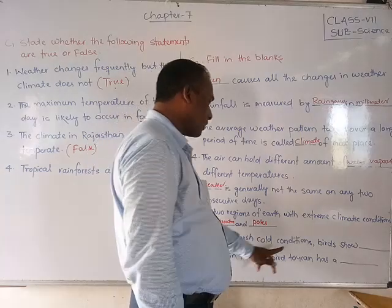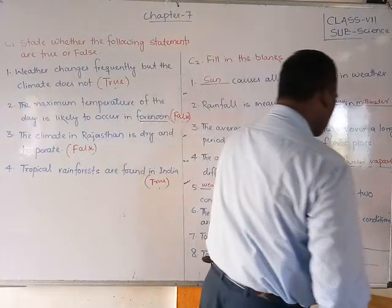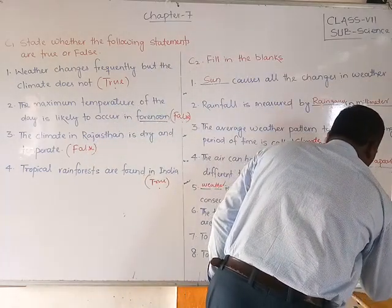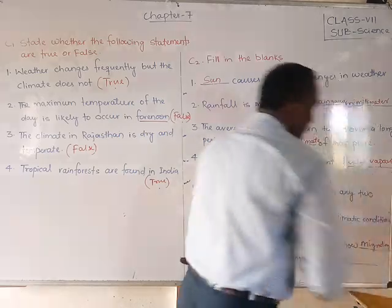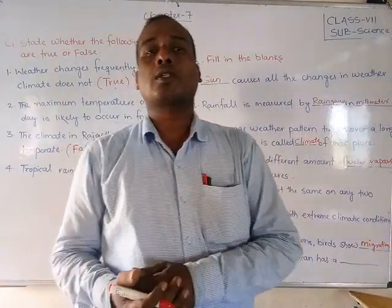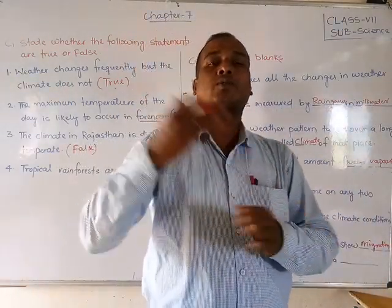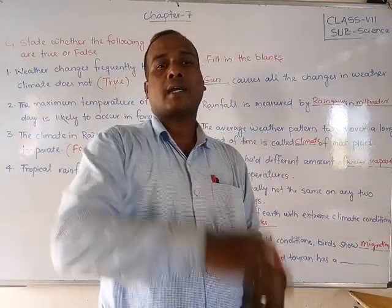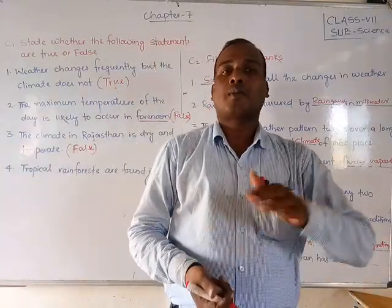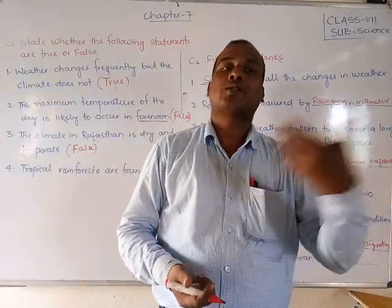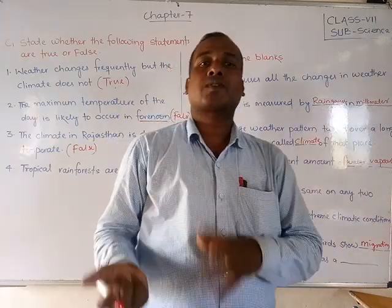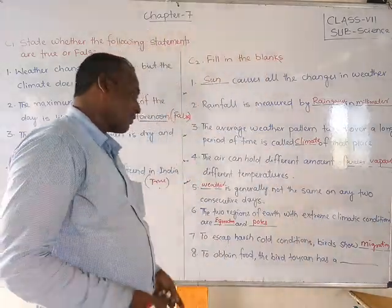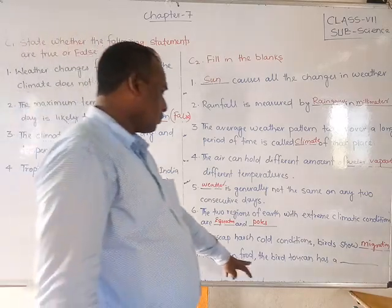Seventh blank: to escape the harsh cold conditions, birds show dash. Due to more cold, birds change from one place to another place. Whenever it becomes hot, they come back to their original place. Birds move from one place to another to escape the cold. The answer is: migration.